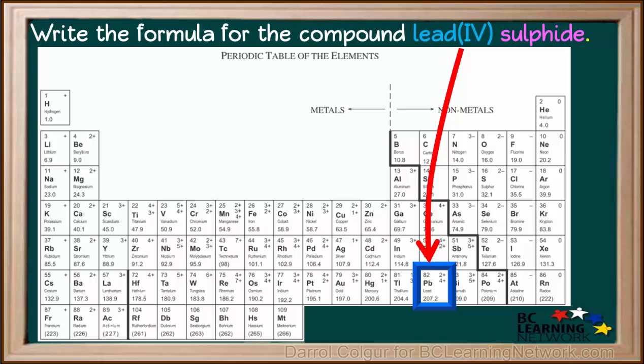The metal lead is found here. It forms an ion with either a positive 2 charge or a positive 4 charge. And for sulfide, we go to the element sulfur. The sulfide ion it forms has a charge of negative 2.